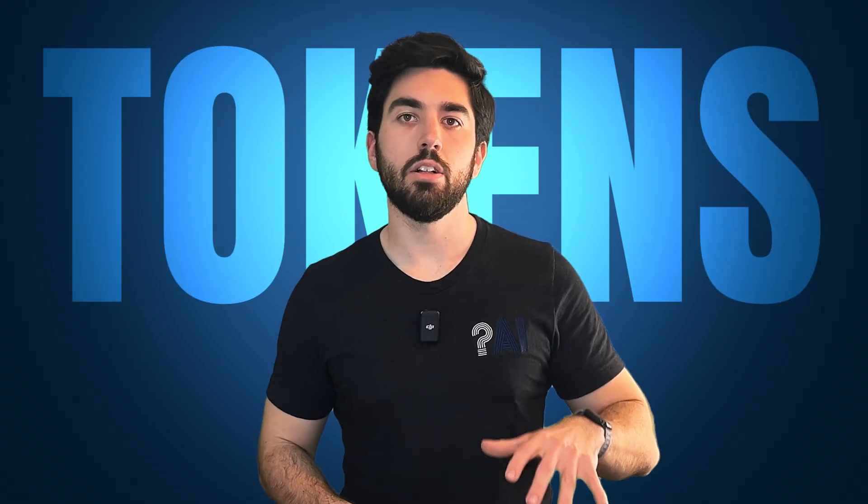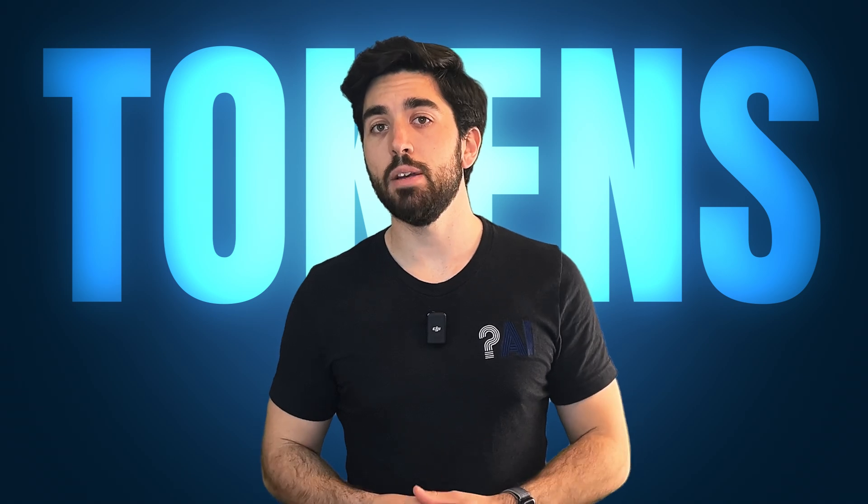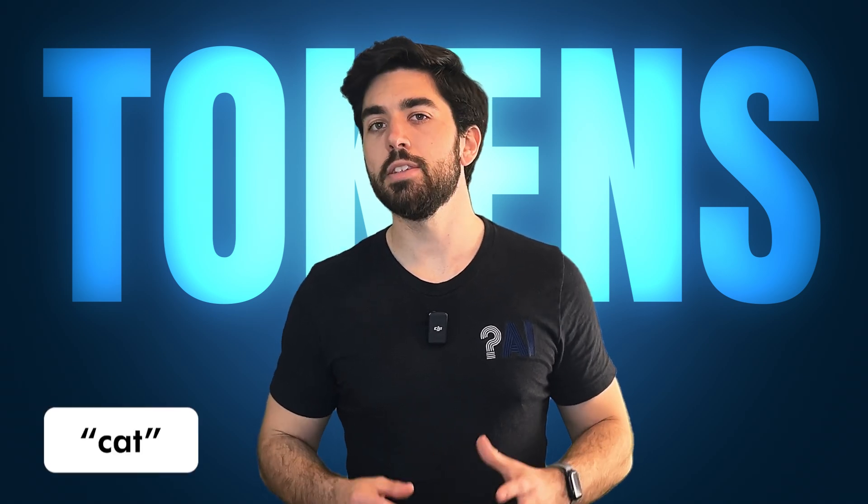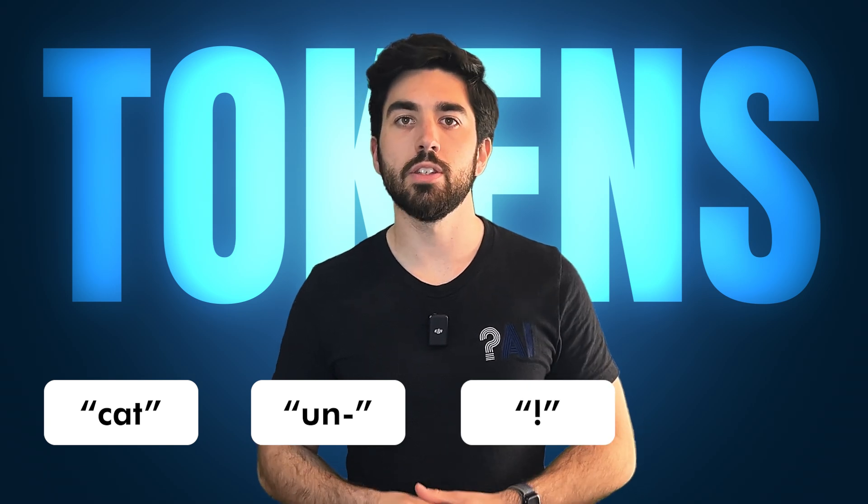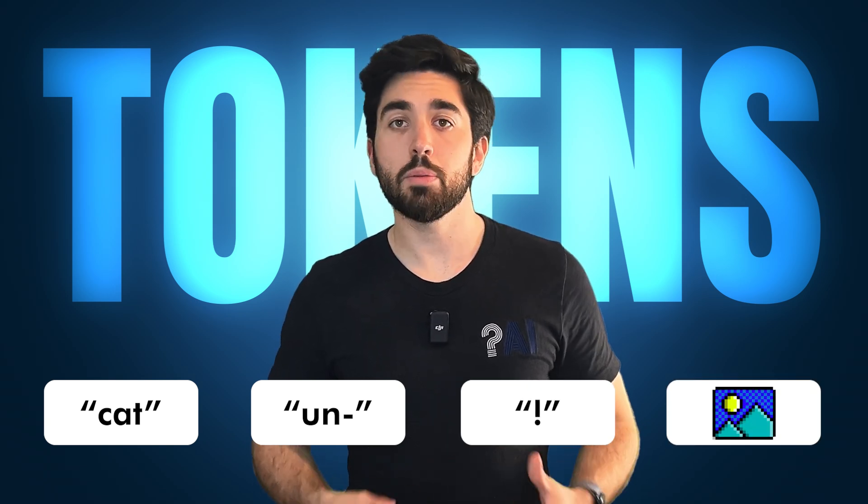LLMs don't see words. They have never seen a word. What they see are called tokens. In the context of LLMs like GPT-4, tokens are not strictly whole words. They can also be parts of words, common subwords, punctuations, or even parts of images like pixels.